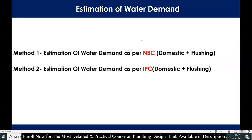Estimation of water demand: we will estimate how much water is required by the building, either for domestic purpose or for flushing purpose. In this course we will discuss two methods: the first method is estimation of water demand as per NBC, that is the National Building Code of India, for both domestic plus flushing. The second method is estimation of water demand as per IPC, that is International Plumbing Code, also covering both domestic and flushing.